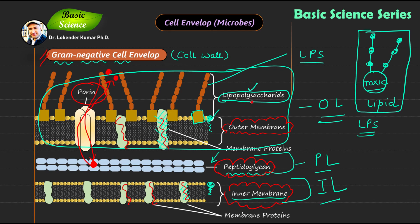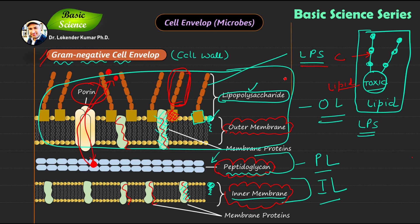You can see these porin proteins play a very important role. Peptidoglycan is important for the structure of the cell. The outer membrane and inner membrane have proteins that play a very important role in cell function. Then you have the lipopolysaccharide, which contains a carbohydrate component and a lipid component — the lipid component is toxic and responsible for the inflammatory response. The carbohydrate component is more important for cell attachment.